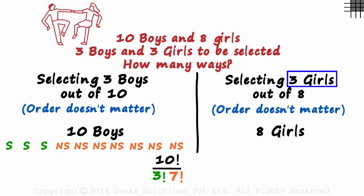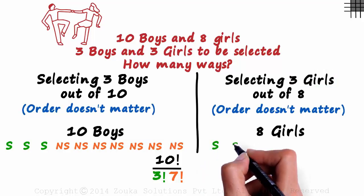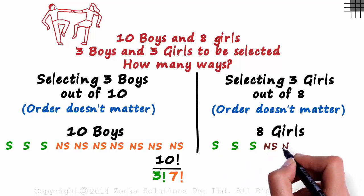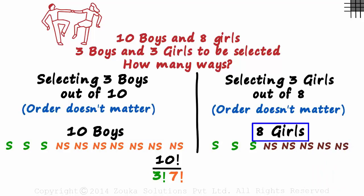I am sure all of you got it right. As 3 girls are selected, we write S 3 times. And the remaining 5 are not selected. So we write NS 5 times. Out of these 8, these 3 are similar, and these 5 are also similar.